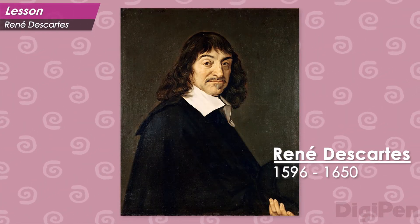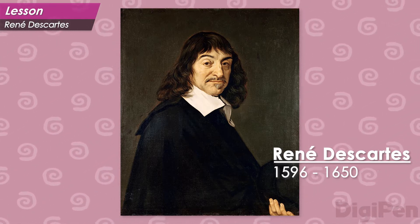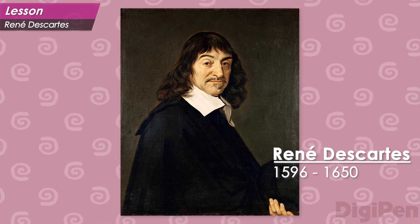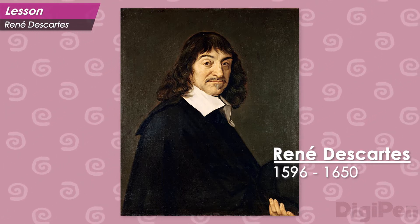The Cartesian coordinate system is a way of assigning numbers to locations in space. It's named after French mathematician and philosopher René Descartes. Let's talk about how it works.